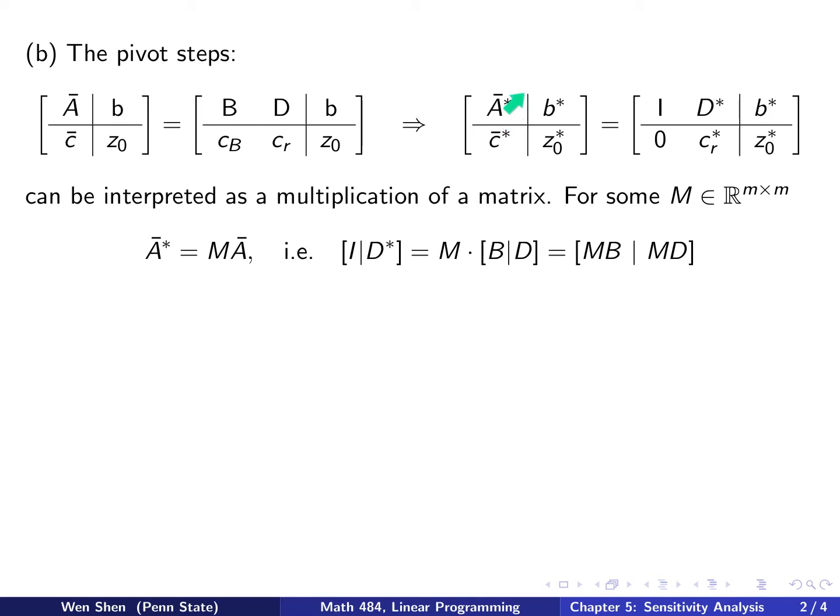So A-bar star can be interpreted as M times A. So the A-bar star, we know is identity and some matrix D star, and that equals M times A. A is the matrix consisting of B and D. I can multiply M into each part, so I would have MB, which is a square matrix, and M times D, which is non-square.